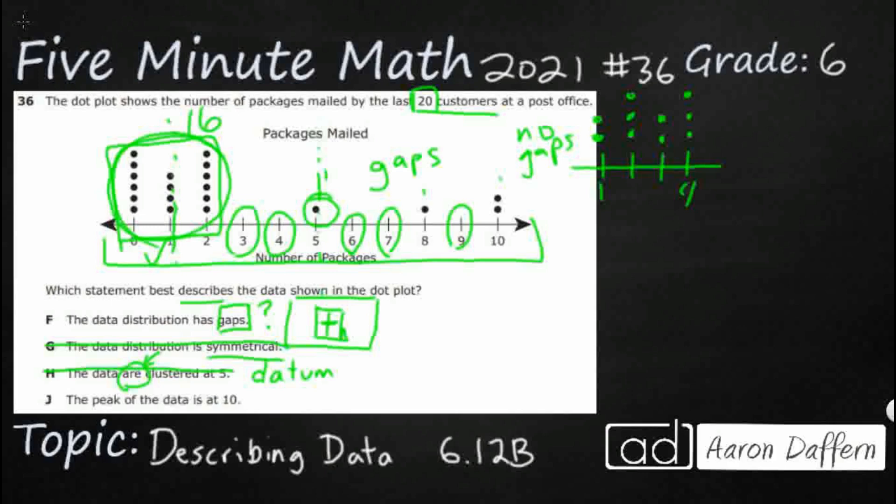Okay, the peak is where, think of a mountain peak, right? A little mountain peak right there. Where's the highest? Even though 10 is at the end of our data, it's only got 2, we actually have 2 peaks. Right here at 0, and right here at 2. So those are our 2 peaks. 10 is just at the upper range, the upper limit. So that is incorrect. So our answer is F. The data distribution has gaps.